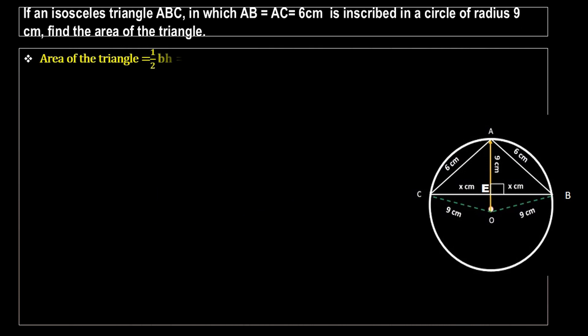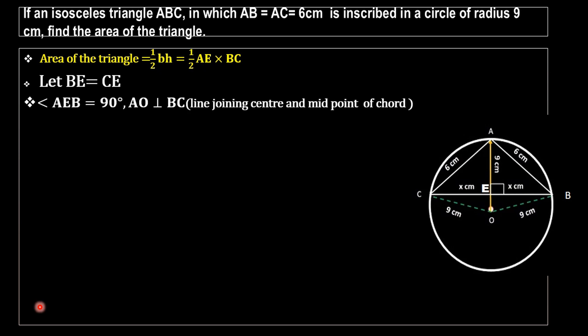The area of the triangle is equal to half into AE into BC. So we have to find AE and BC. E is the midpoint of BC, so CE equal to BE. Angle AEB equals 90 degrees, meaning AO bisects BC perpendicularly. Since AOE is the line joining the center of the circle and midpoint of the chord, it bisects the chord at 90 degrees. So angles AEB, AEC, OEC, and OEB are all equal to 90 degrees.